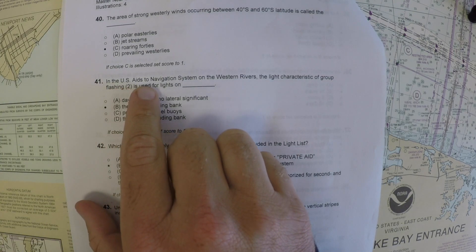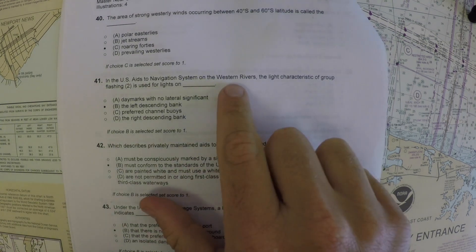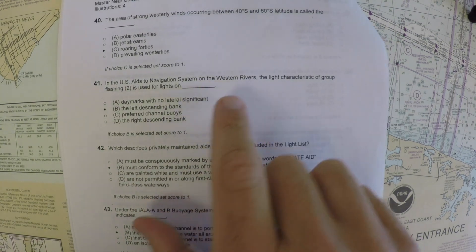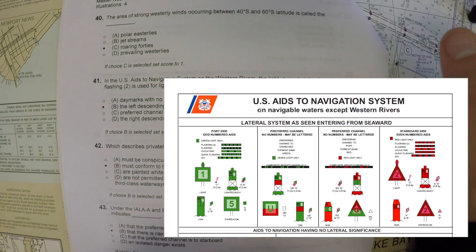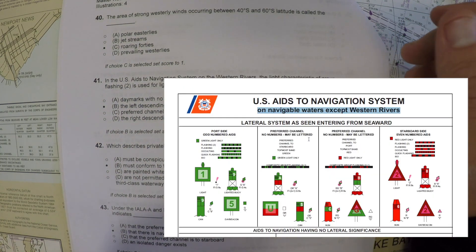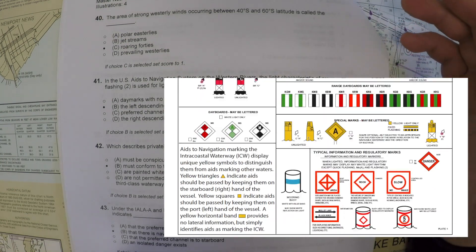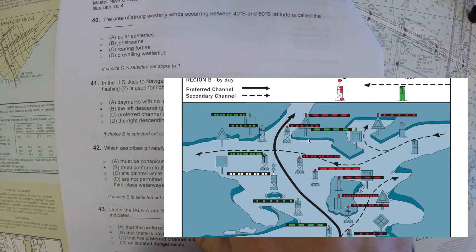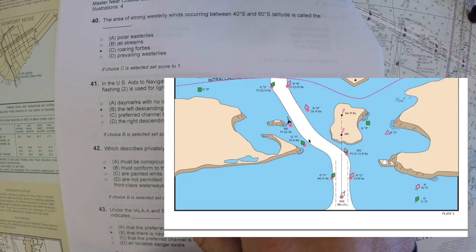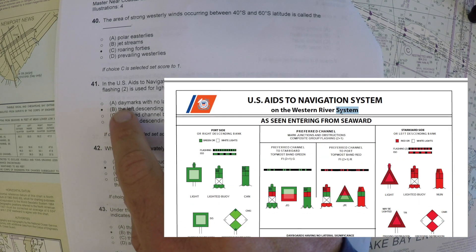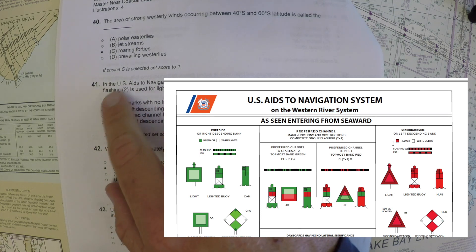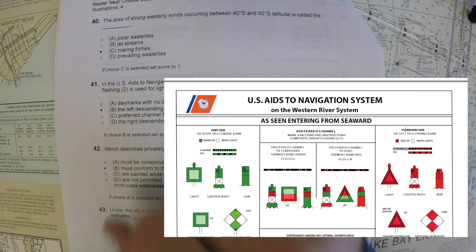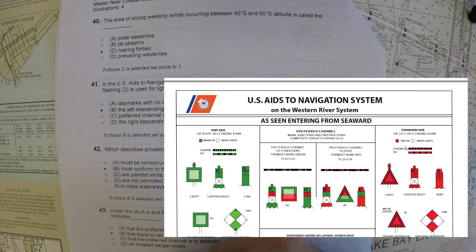For question number 41, in the USAID's navigation system on the western rivers, the light characteristic of group flashing 2 is used for which lights? In the light list, they have a couple of key images in the front. Be sure you go to the section for the western rivers — you can see that group flashing 2 belongs to the left descending bank. It's pretty much straightforward right out of the light list.